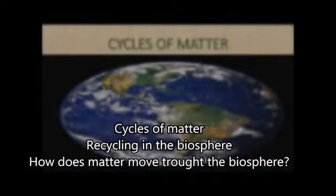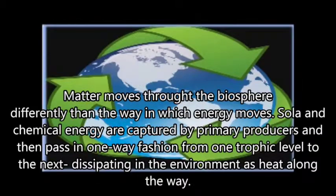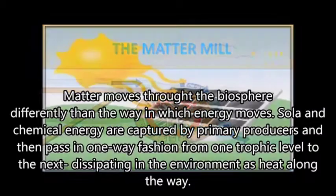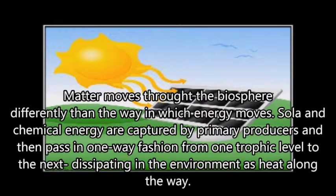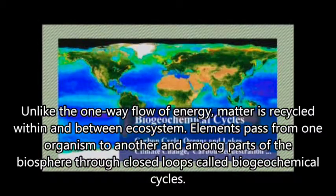Cycles of matter recycle in the biosphere. Matter moves through the biosphere differently than the way in which energy moves. Solar and chemical energy are captured by primary producers and then pass in a one-way fashion from one trophic level to the next, dissipated in the environment as heat along the way. Unlike the one-way flow of energy, matter is recycled within and between ecosystems.